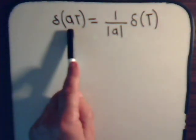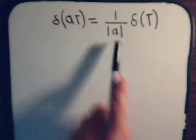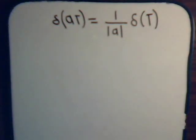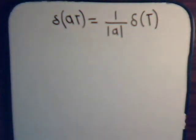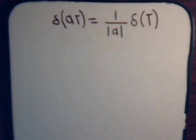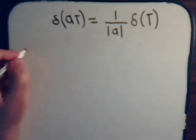So if a is positive here, it's going to be positive here. If it's negative here, it's still going to be positive there. And to try to derive that, let's go back to our basic definitions.